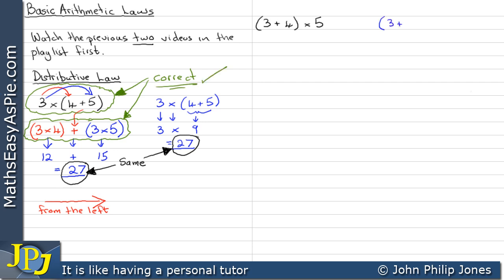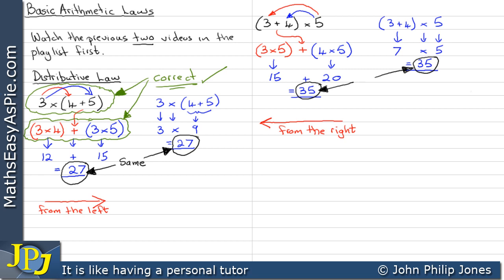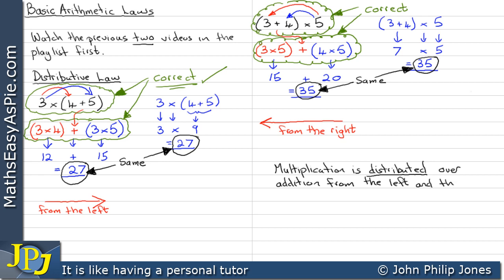Let's look at another example. The sum of 3 and 4 is multiplied by 5. Over here in blue let's work out the answer — that's 7 times 5 so we can see it's 35. Now here I'm going to multiply the 3 by the 5, bring down the plus and then multiply the 4 by the 5. That gives us 15 plus 20, which gives us 35. So we've done the multiplication from the right and we get 35 in both cases. Multiplication is distributed over addition from the left and the right.